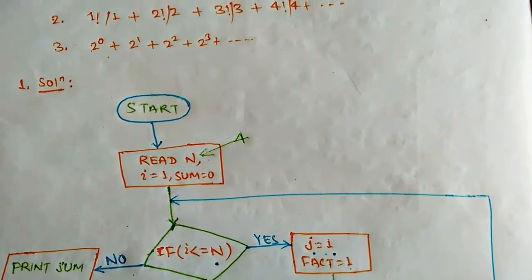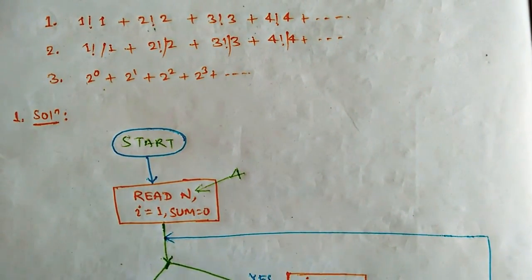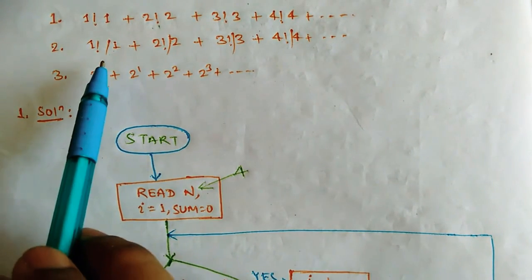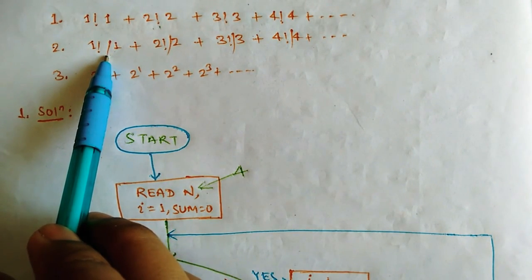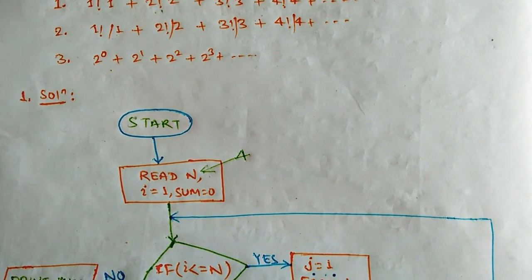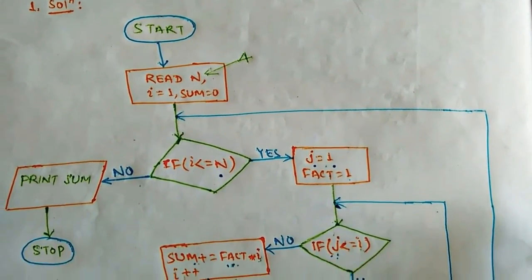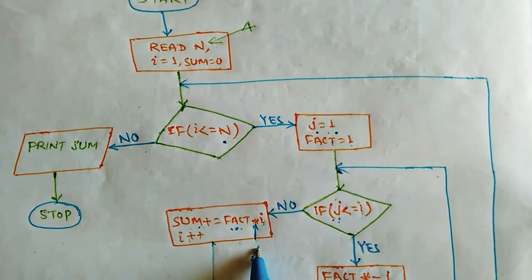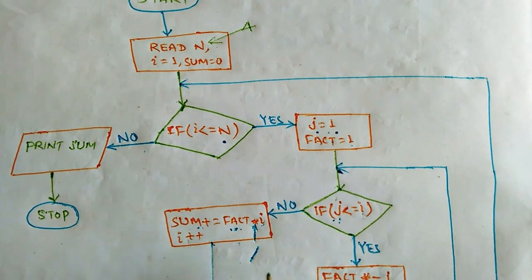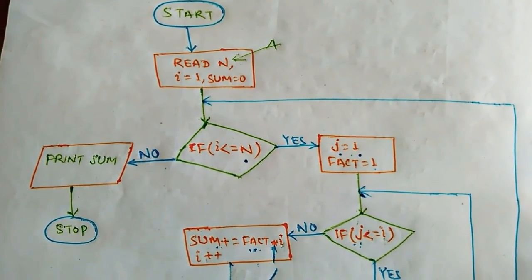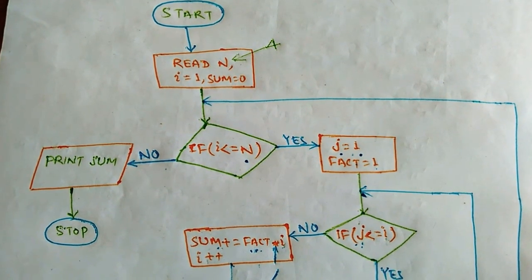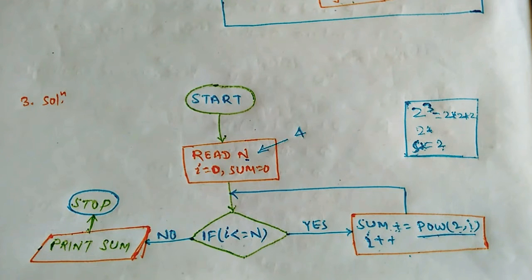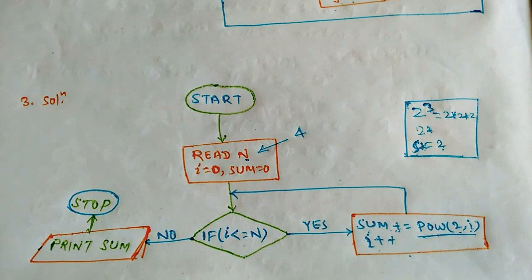This covers the first and second series. As you can see, the first and second series differ only in operator — where multiplication is used, replace it with division and the flowchart for the second series is designed. At that position, if we use the division operator, the flowchart is designed for our second series. Hope you understand the concept of how to draw a flowchart for a given series. If you have any doubt, you can ask in the comment box. Thank you so much.